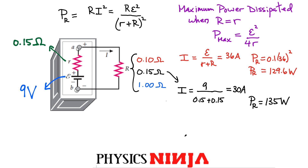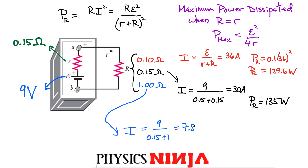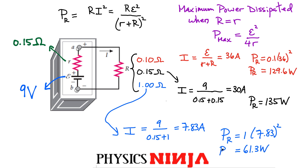For the larger load resistance R = 1 Ω: the current is 9 / (0.15 + 1) ≈ 7.83 A — the smallest of the three cases. The power dissipated is 1 × 7.83² ≈ 61.3 W, which is much smaller.